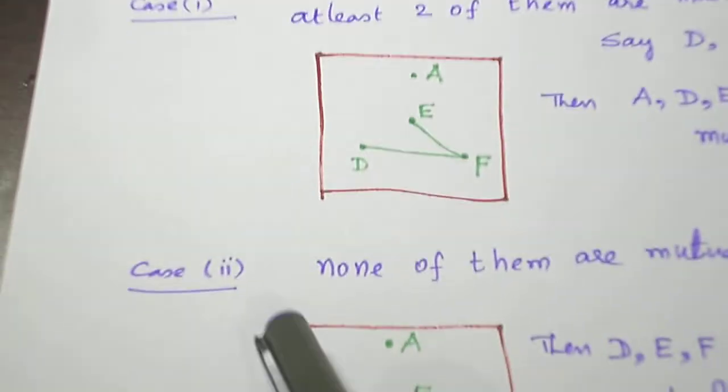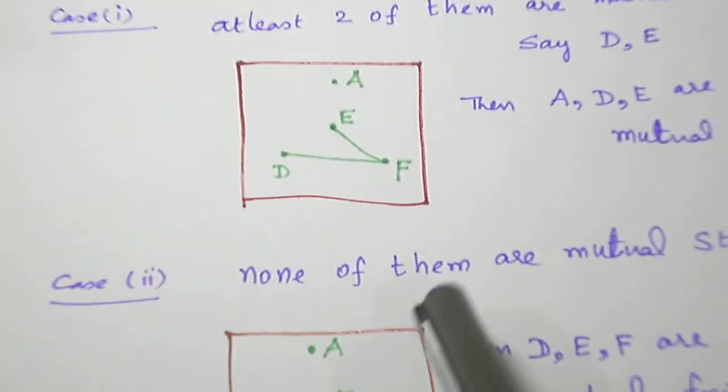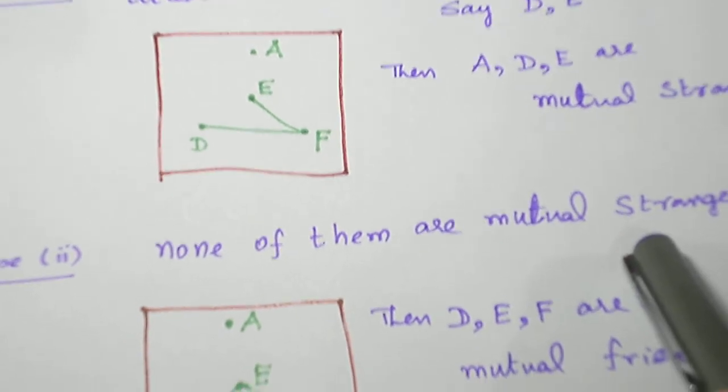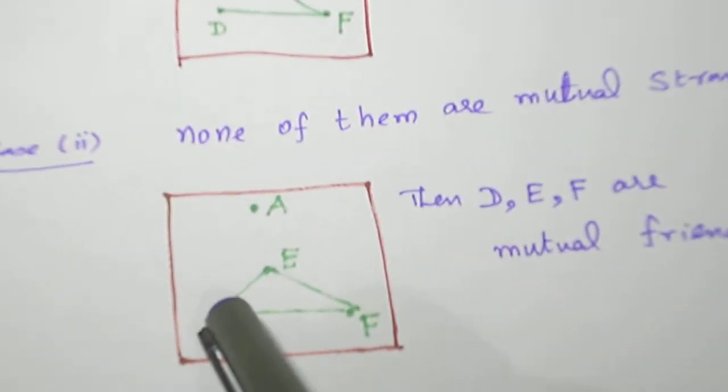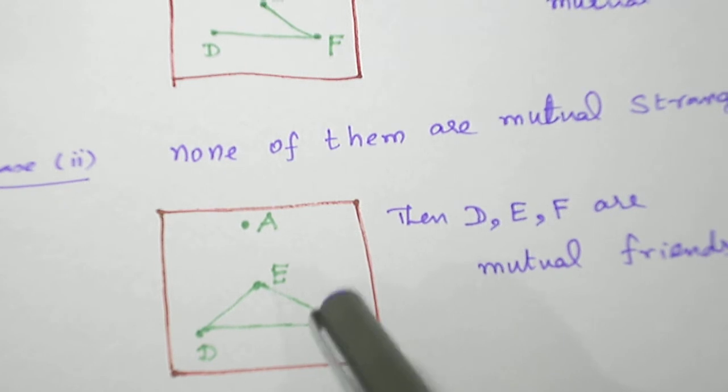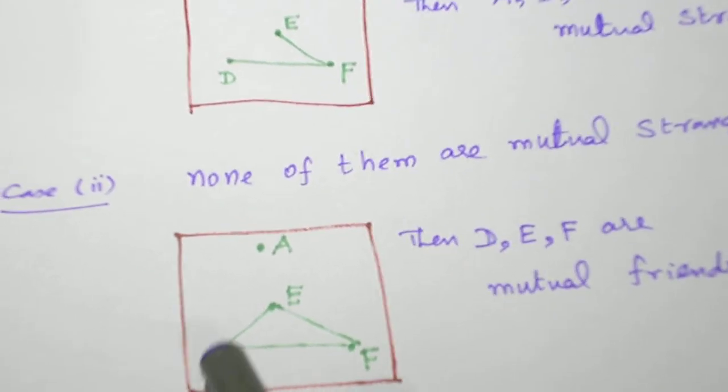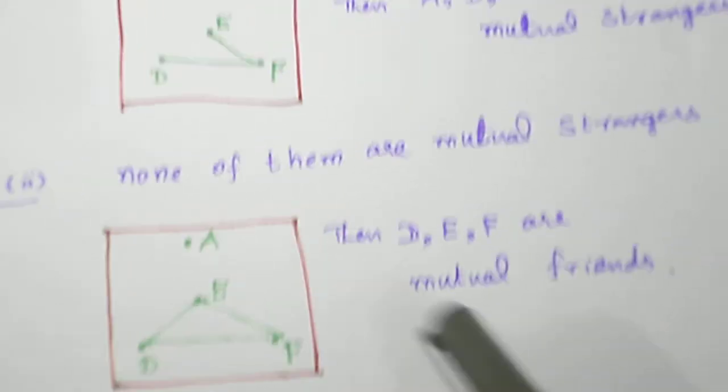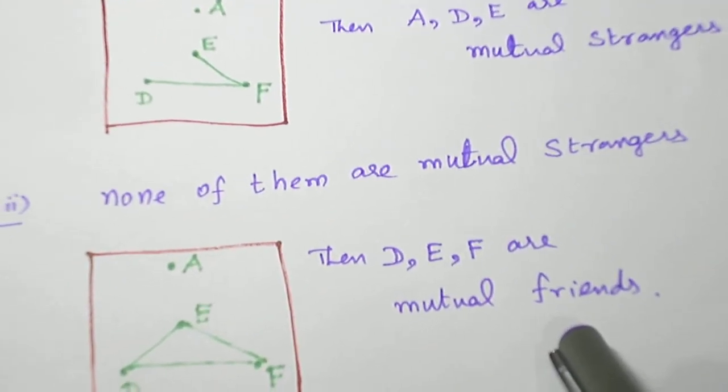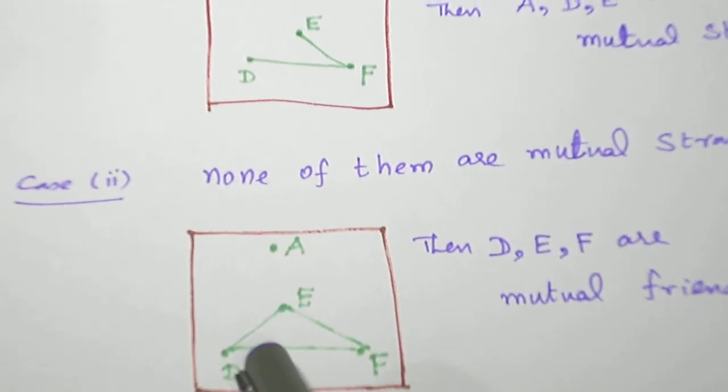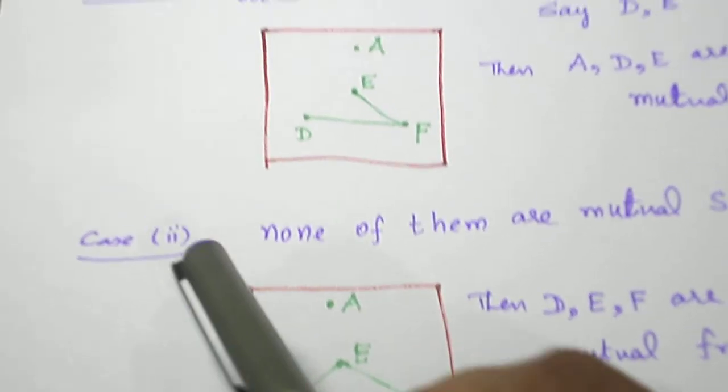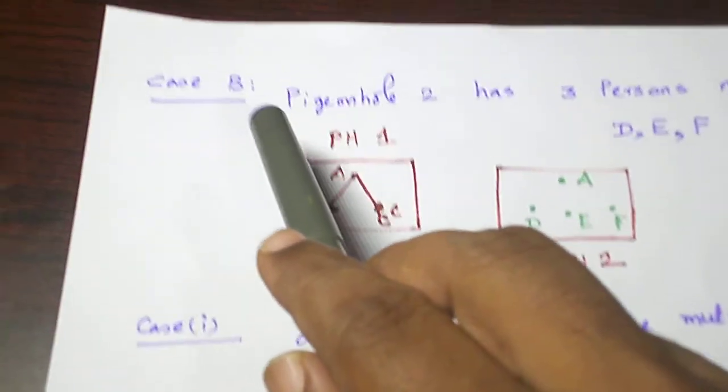And if you take case 2, none of them are mutual strangers. So D is known to E, D is known to F. E is known to D, E is known to F. If we take D, E, F are mutual friends to each other. So we got 3 mutual friends in case 2 of case B.